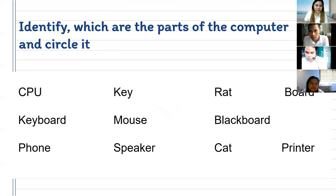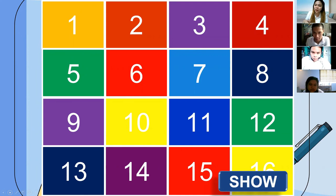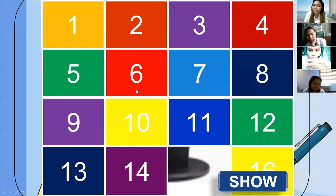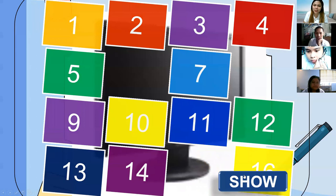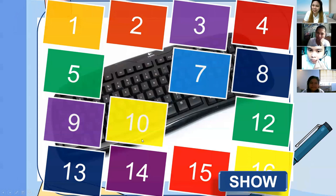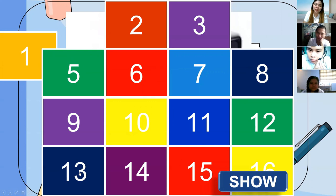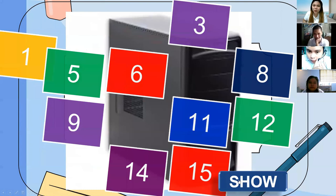For the last one, to recap whatever we discussed today, you will tell me what this is. I have here a picture — tell me a number and guess the hidden picture. I will reveal one by one, then tell me the answer. What do you think is this part? Monitor. Yes, Alfrancis? Monitor. Very good, this is a monitor. Next — keyboard. Enzo's answer is keyboard. How about this one? CPU. It is a CPU.